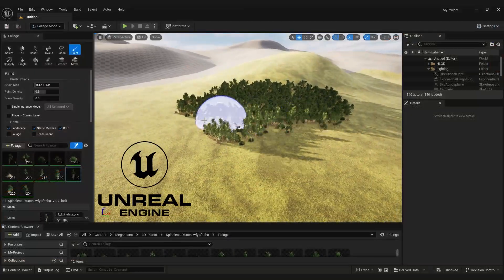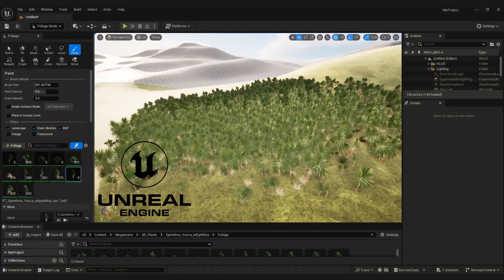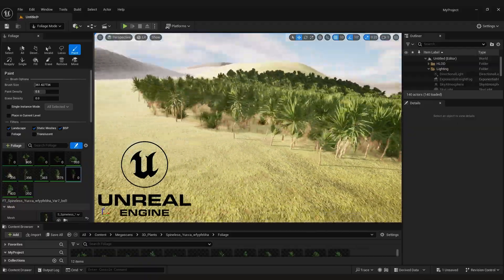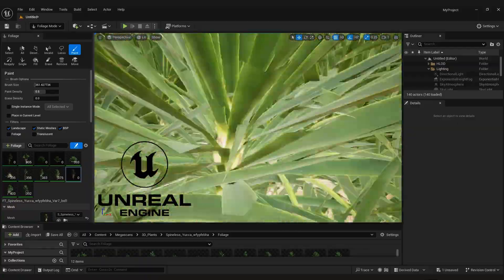Terrains may also feature randomized or custom object placement to place forests, grass, and other foliage. It may have dynamic textures based on height, steepness, and other variables. It is a pretty complex and versatile feature.